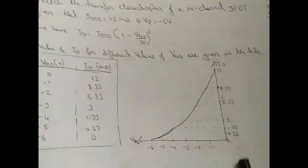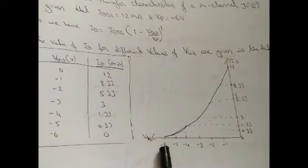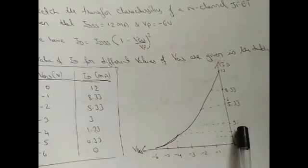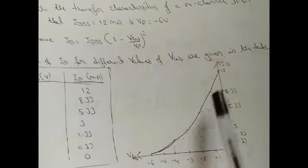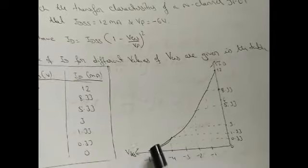Plotting these values: at VGS = 0 the current is 12 mA, decreasing to zero at VGS = −6 V. These points form the transfer characteristics curve. The key data points to remember are: 0 V → 12 mA, −1 V → 8.33 mA, −2 V → 5.33 mA, −3 V → 3 mA, −4 V → 1.33 mA, −5 V → 0.33 mA, −6 V → 0 mA.